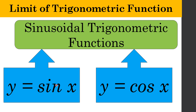To evaluate limits of trigonometric functions, we need to establish first the values of the limits of sine x as x approaches c, and the limit of cosine x as x approaches c. Looking at the graphs of sine x and cosine x, we can generalize the important properties of y equals sine x and y equals cosine x, which will allow us to evaluate the limits of trigonometric functions.